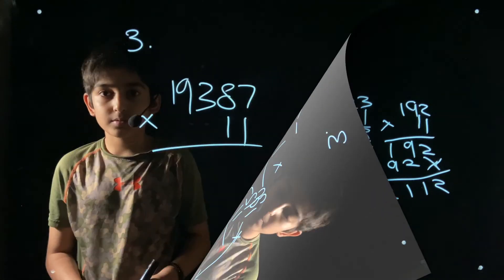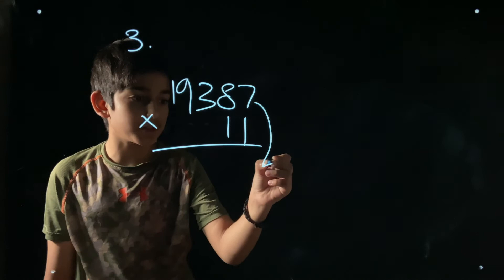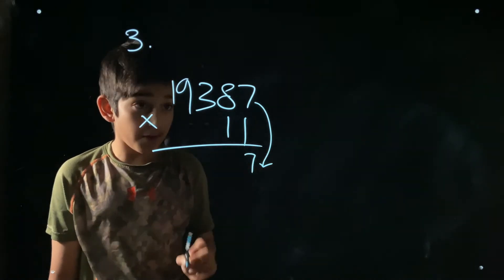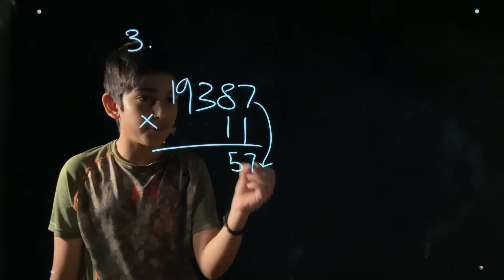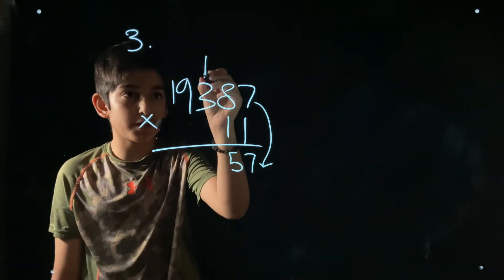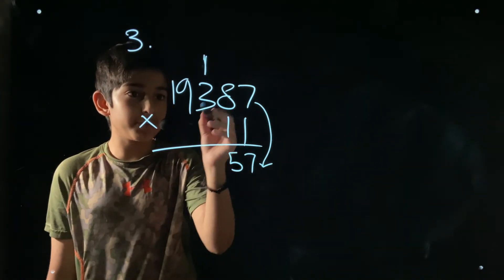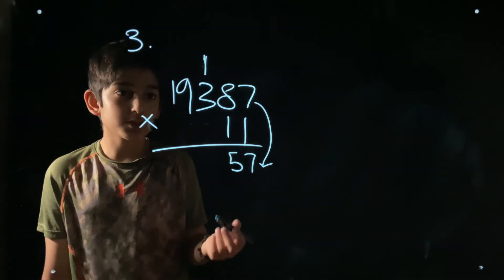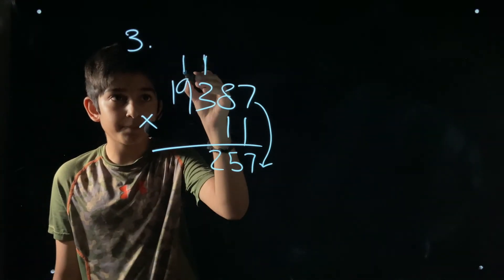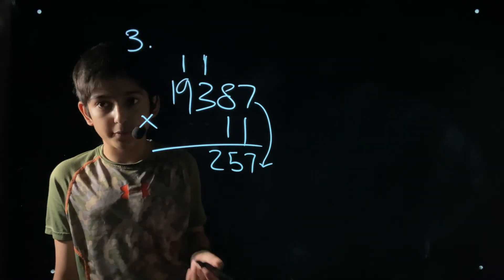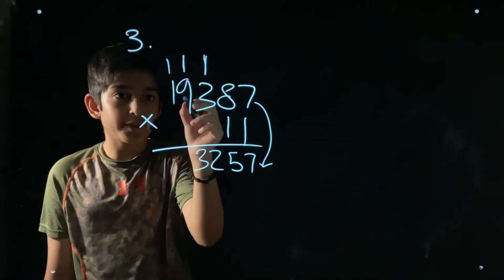The formula is: take the last digit, place it at the end; add adjacent digit pairs working left; place the first digit at the front, applying carries as needed. For a five-digit example with 19387 multiplied by 11: bring down the 7, then 8 plus 7 is 15 — write 5, carry 1.